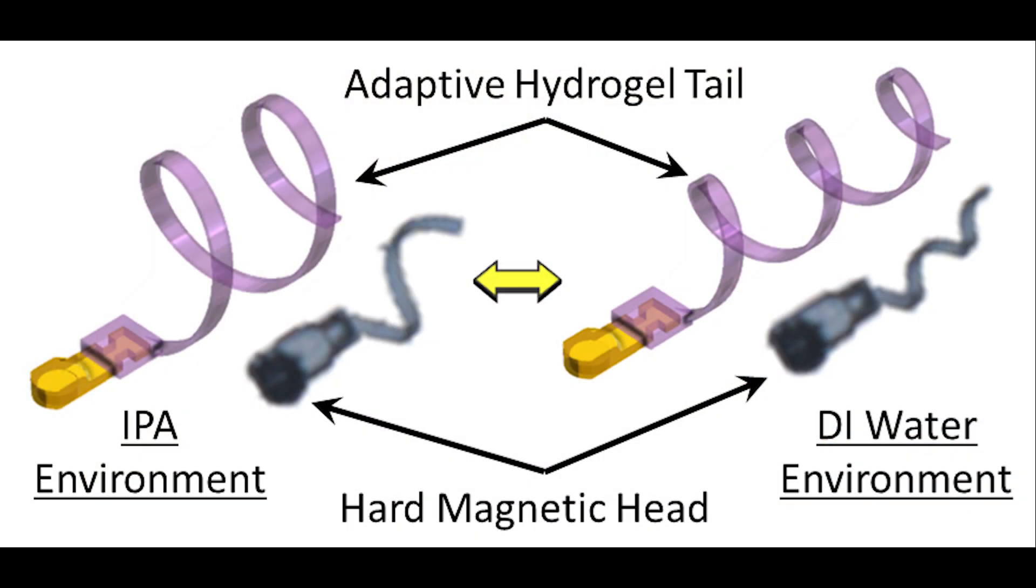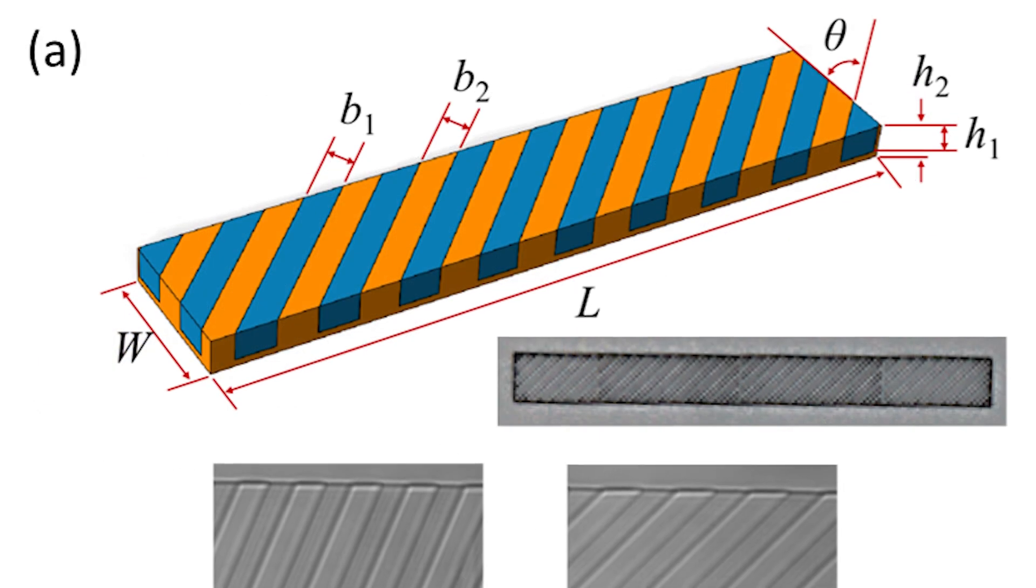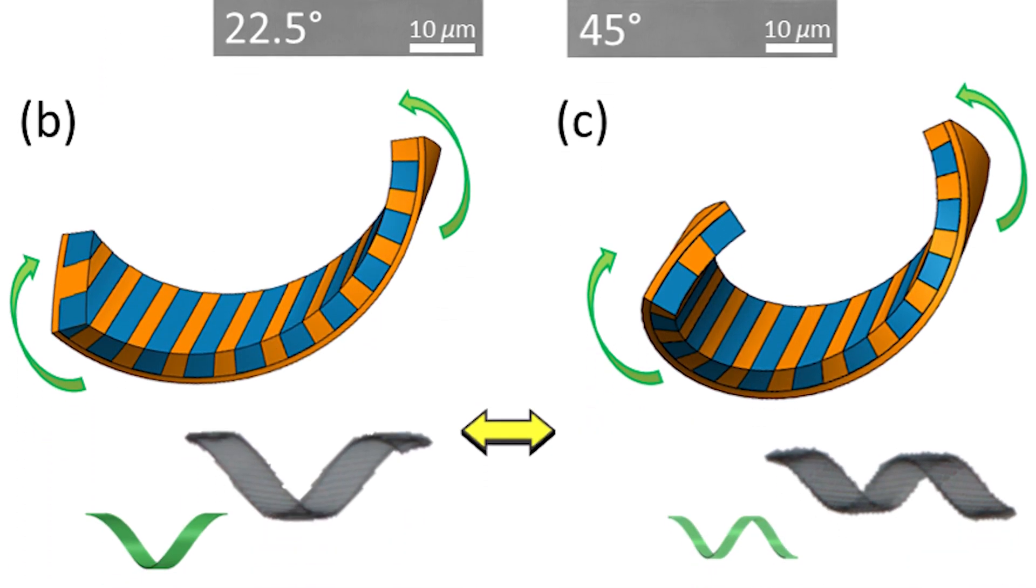That's why we have the helical tails attached to the magnetic body. The helical tail is adaptive because we designed it with some modulating, alternating hydrogen regions from soft to hard. Under different environments, the hydrogen is going to deform into a different shape.